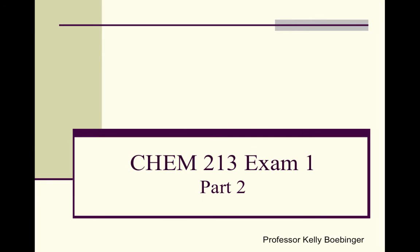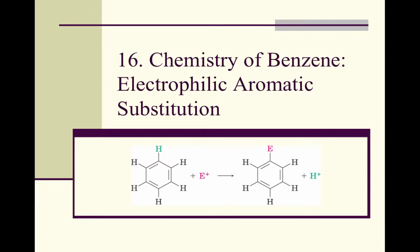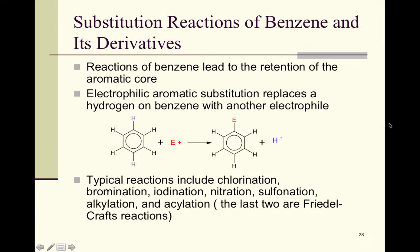Chem 213 exam 1 material part 2: chemistry of benzene, electrophilic aromatic substitution. This chapter will also cover some other reactions. The most common reaction for benzene, because the benzene ring itself is so stable, is electrophilic aromatic substitution. This is where a hydrogen is going to be replaced or substituted with an electrophile that is now placed on the ring.